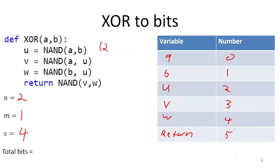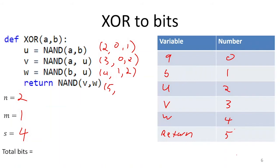So now I can represent each of these lines as a triple of three numbers. u is variable 2, so the first number in this triple is 2 — that's the variable we're assigning things into. The NAND is being done on a, which is 0, and b, which is 1. So that triple represents the first line. The next line: v is variable 3, being assigned the value of doing NAND on a (variable 0) and u (variable 2). Then w is variable 4, getting the result of NAND on b (variable 1) and u (variable 2). The final return is variable 5, assigned the result of NAND on v (variable 3) and w (variable 4). So this list of triples represents the source code of that program.